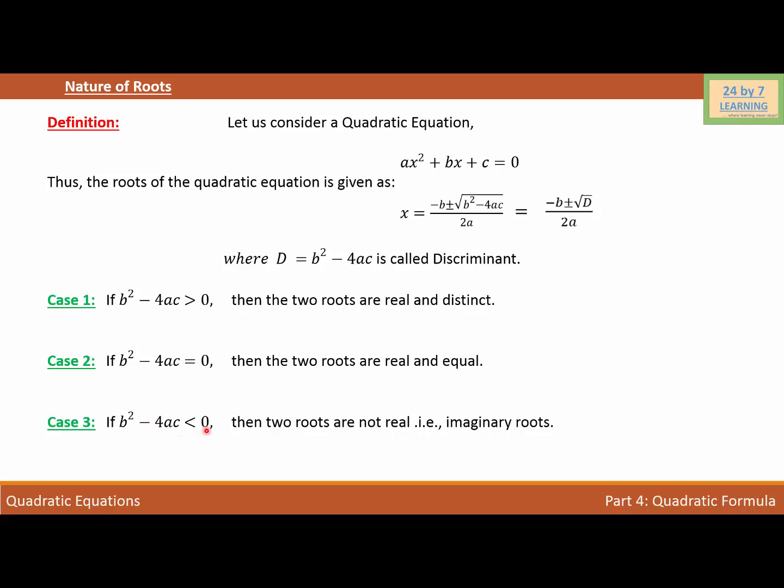Case 3: If b² minus 4ac is less than 0, then two roots are not real, that is imaginary roots. In other words, if discriminant D = b² - 4ac is less than 0, then the roots are not real. They are imaginary roots. You cannot find the real number for the roots of the quadratic equation. Nature of the roots help us determine if the quadratic equation has a real root or not.